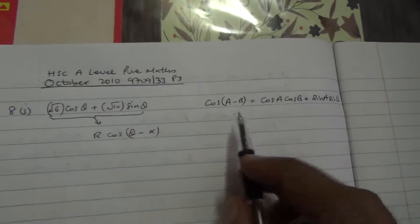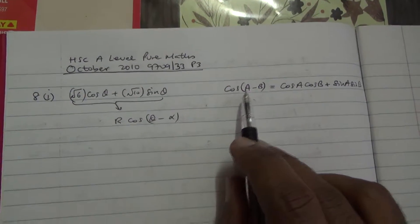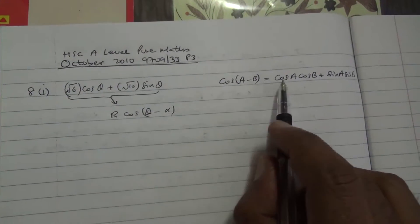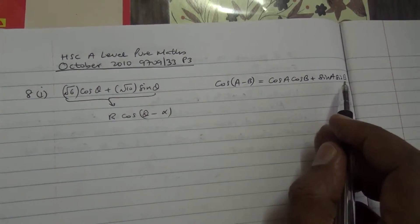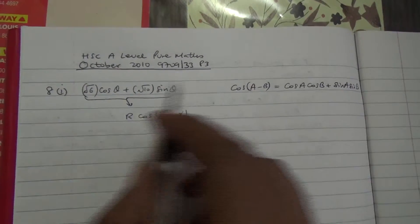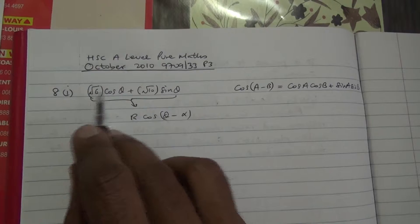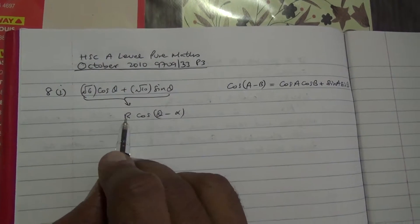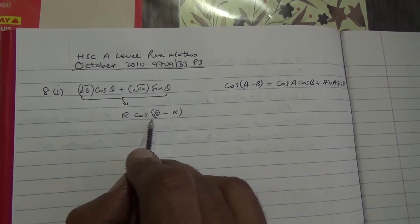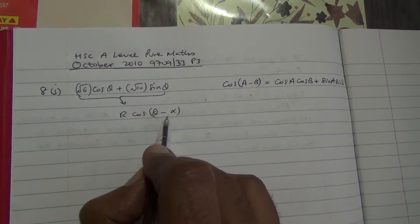For the first part, we're going to be using the compound angle formula. Cos of (A minus B) is equal to cos A cos B plus sine A sine B. We're going to have to put this in the form of r cos(theta minus alpha).